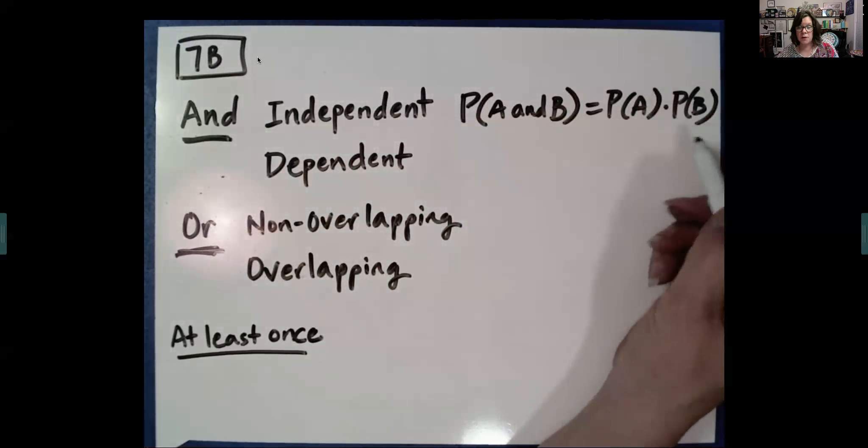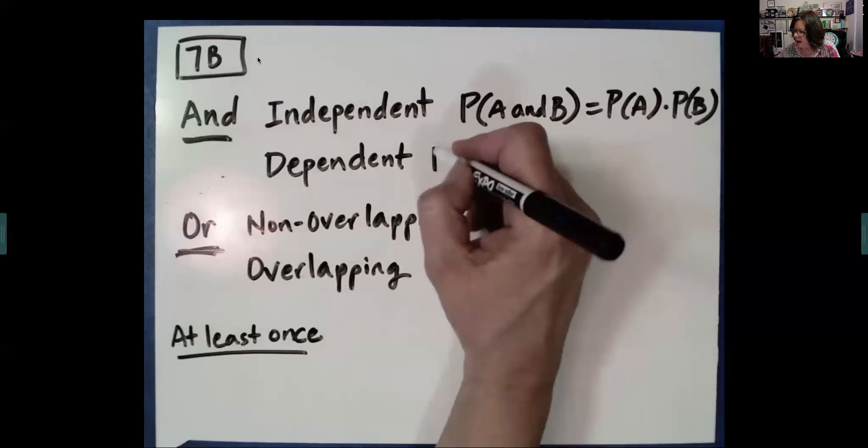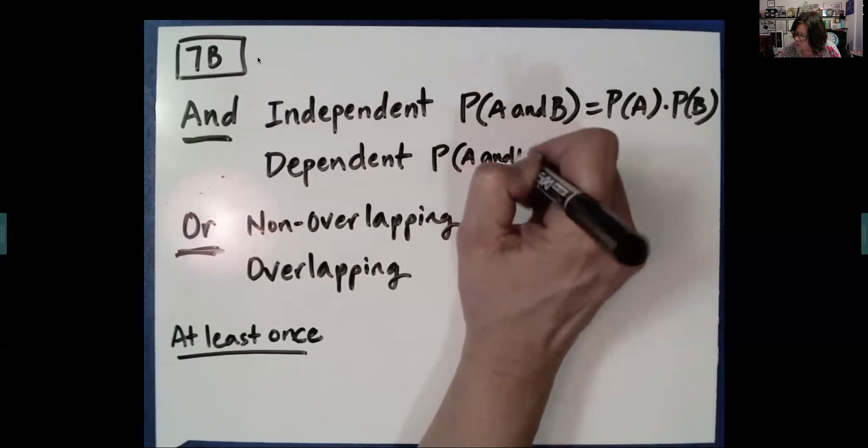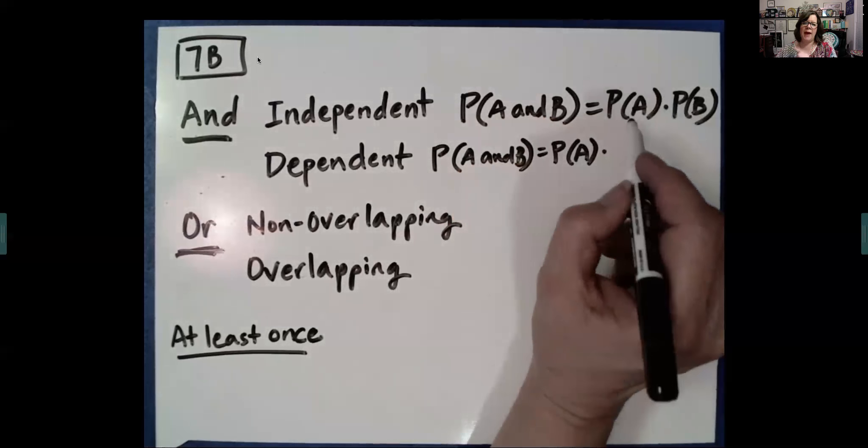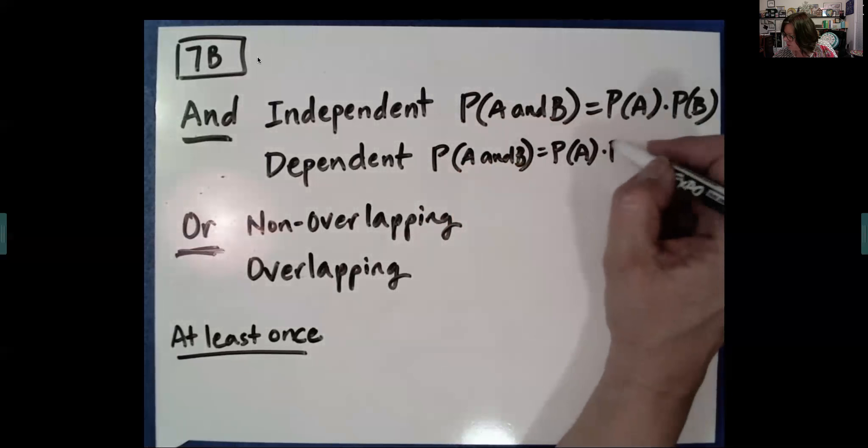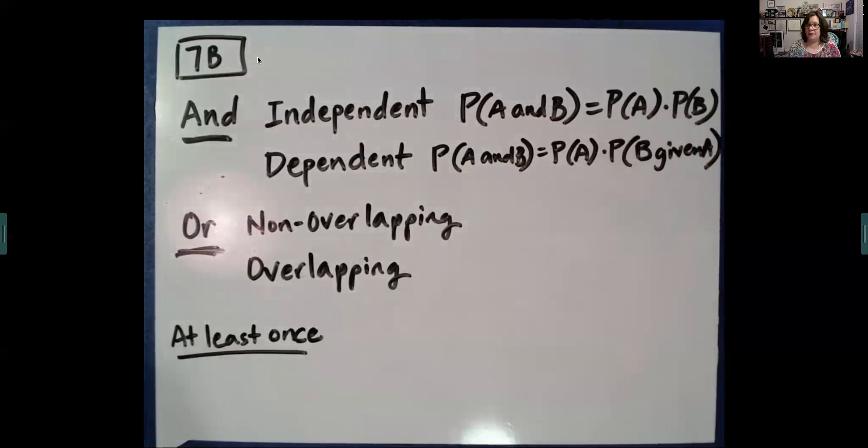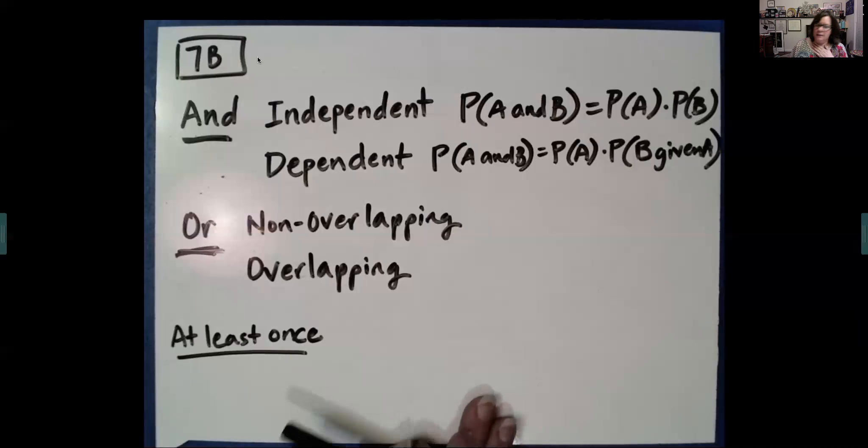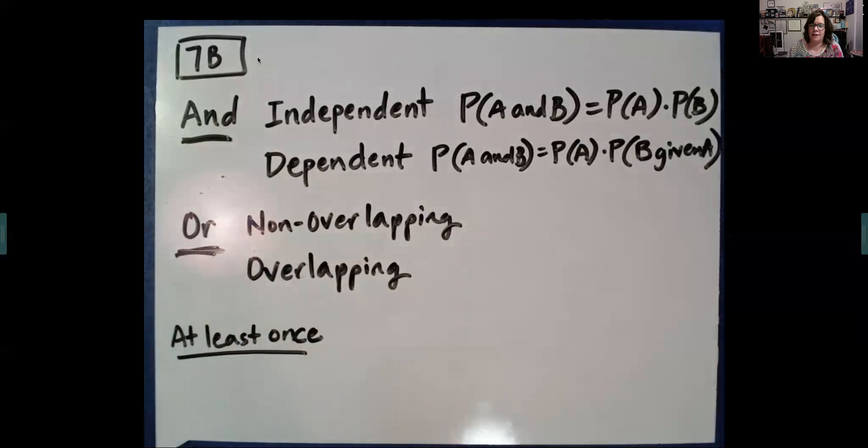Now, if they're dependent, if A happening affects B, then to find this, we're going to do the probability of A and then assume that A has happened. So, this is going to be less than it would be if they were independent. Both of these yield smaller probabilities. It's less likely that one thing and another happens.